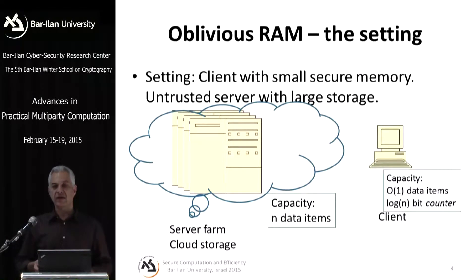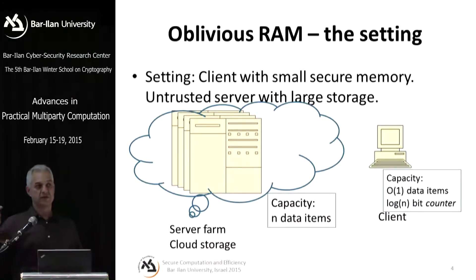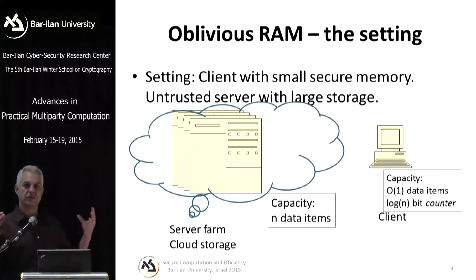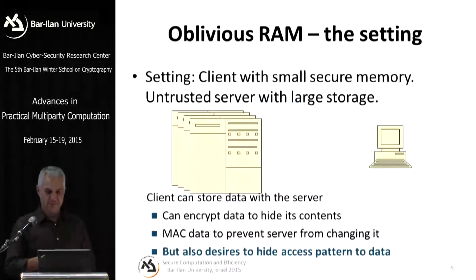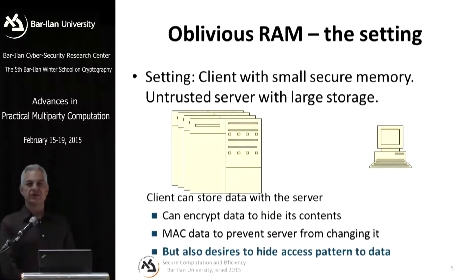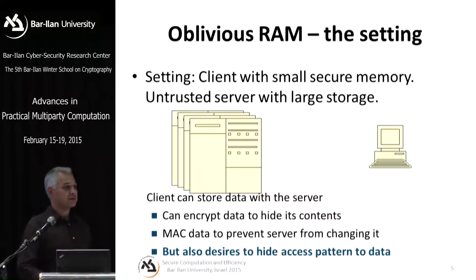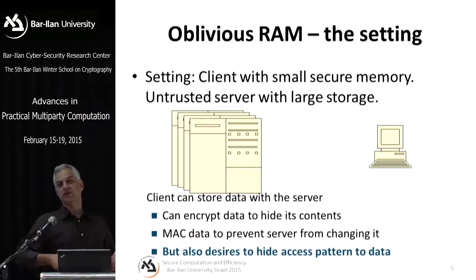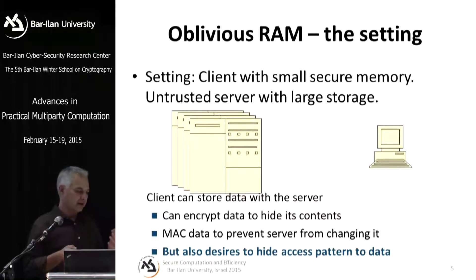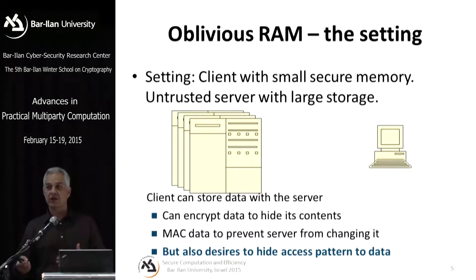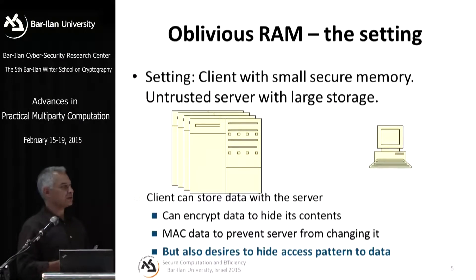The client can store a constant number of data items and a counter — log n bits. The server can store n data items, where data items are blocks or files and could be pretty big. Suppose the client wants to keep the confidentiality of its data. It can definitely encrypt the data to prevent the server from reading it. If the client uses semantically secure encryption, even if it stores two copies of the same data, the server will not be able to identify them.